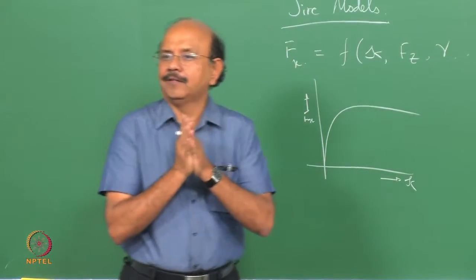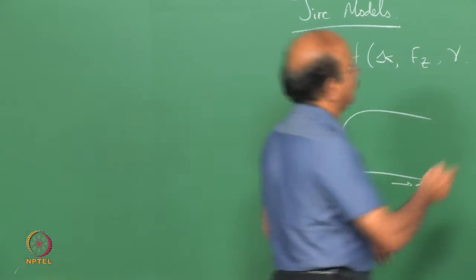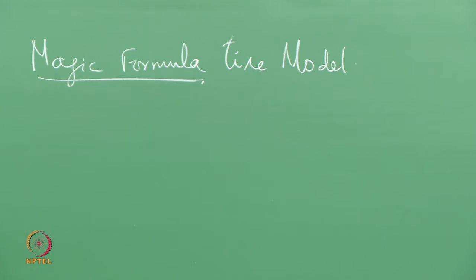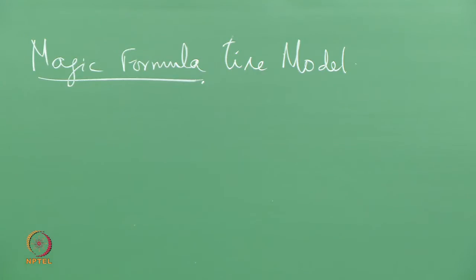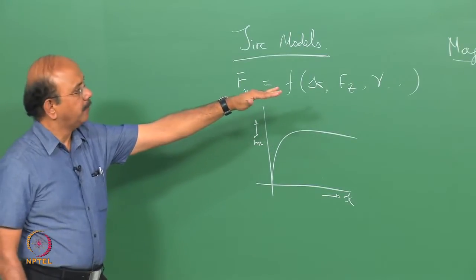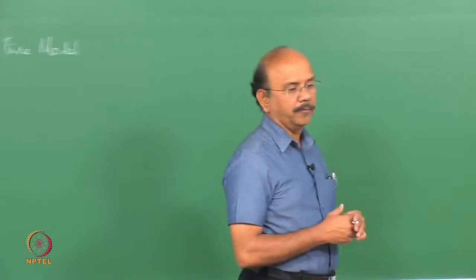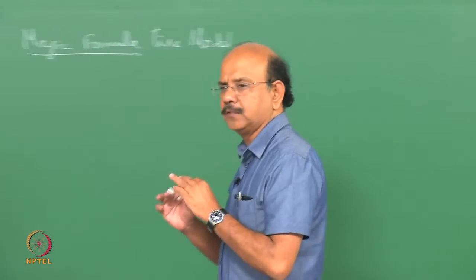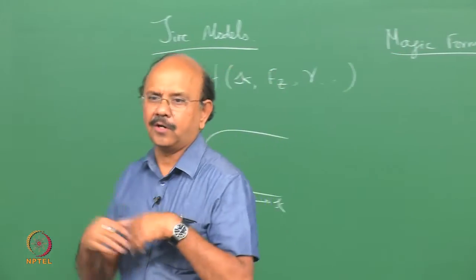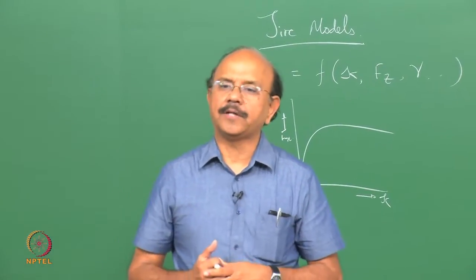First of all, what is the magic formula? A bit of history: this is one of the greatest contributions of Professor Pacejka, who is the forerunner in the whole of tire mechanics and has a very interesting book. He, together with Mr. Becker of Volvo, in around 1987, put up this formula — initially called as the Pacejka tire model, and sometimes later called as the magic formula tire model and so on.